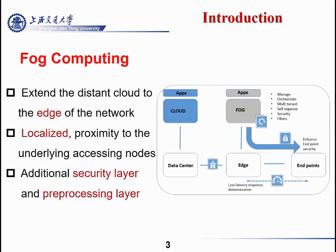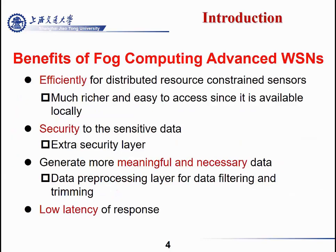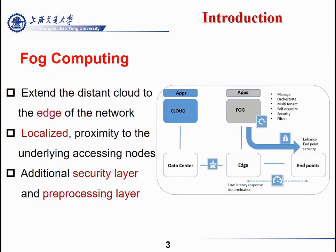Recently, fog computing has become a trend for further wireless sensor networks. As you can see in this picture, the fog extends the distant cloud to the edge of the network, and it is localized and near the underlying access node.